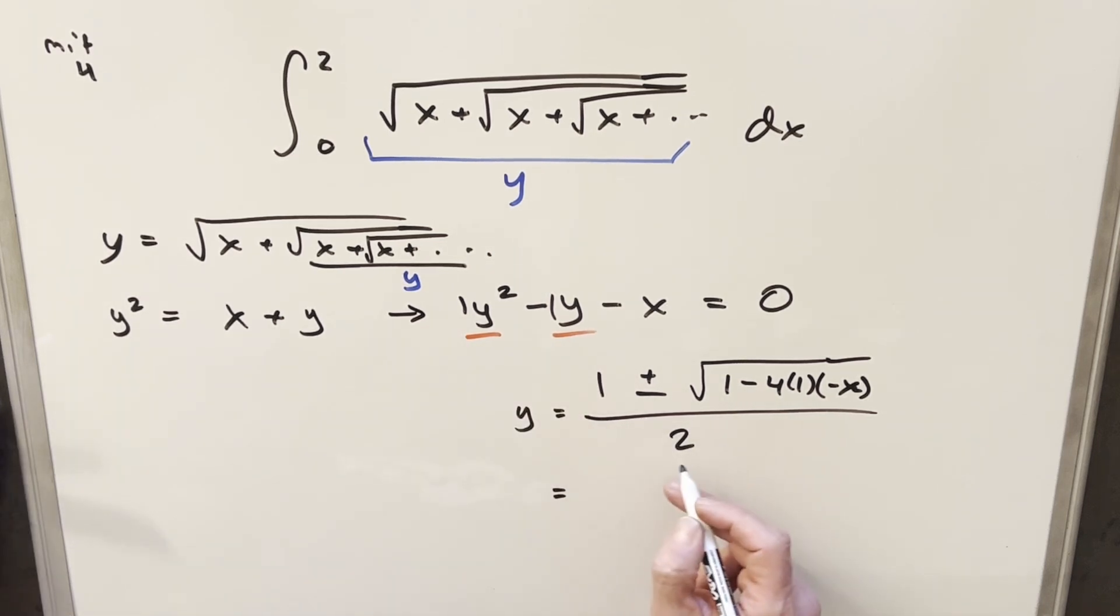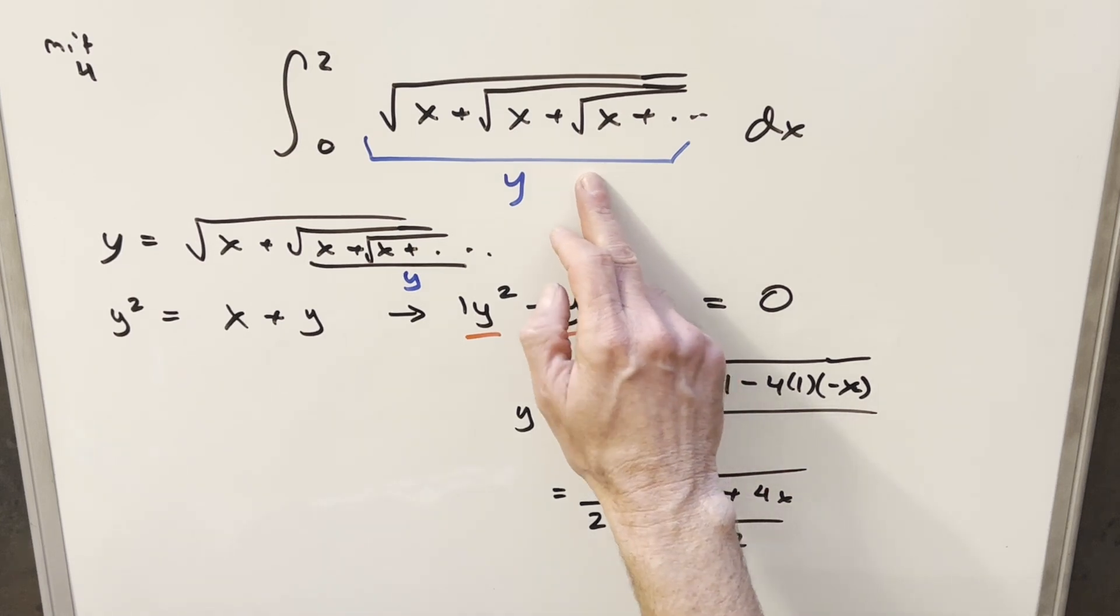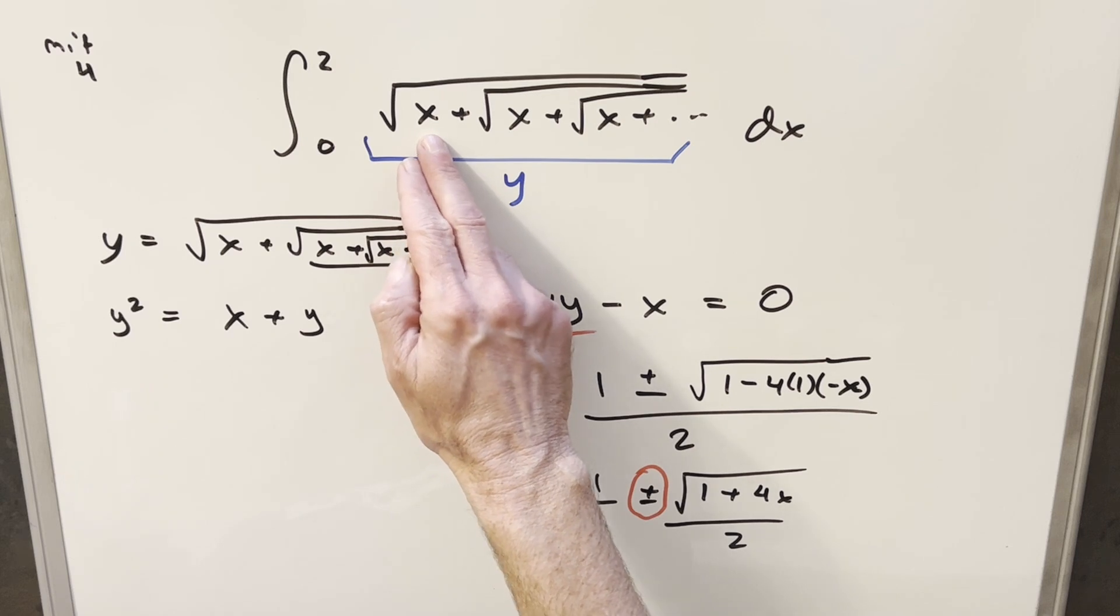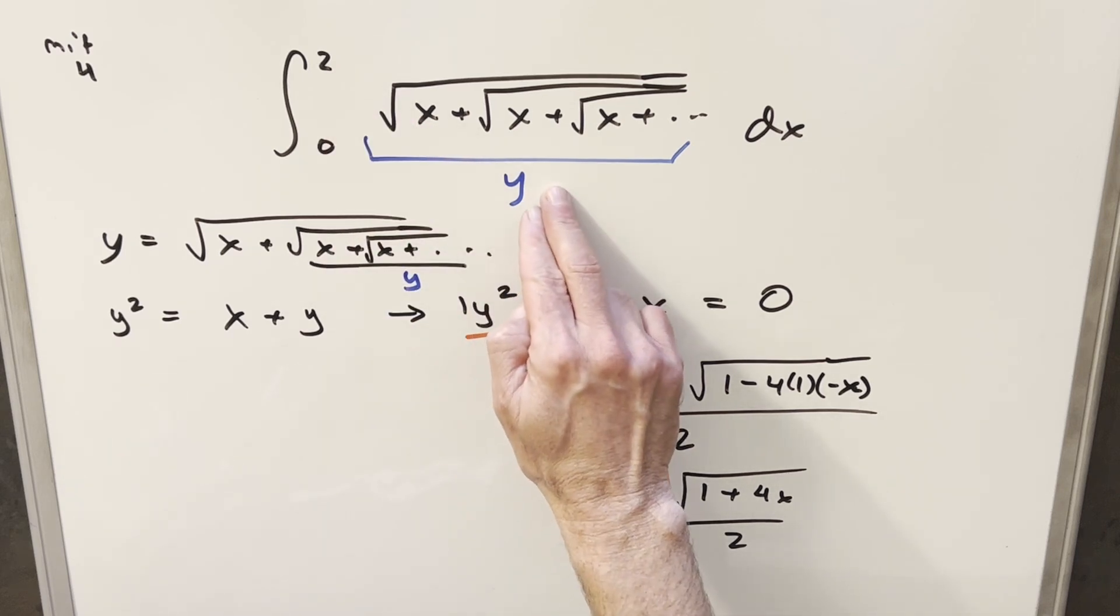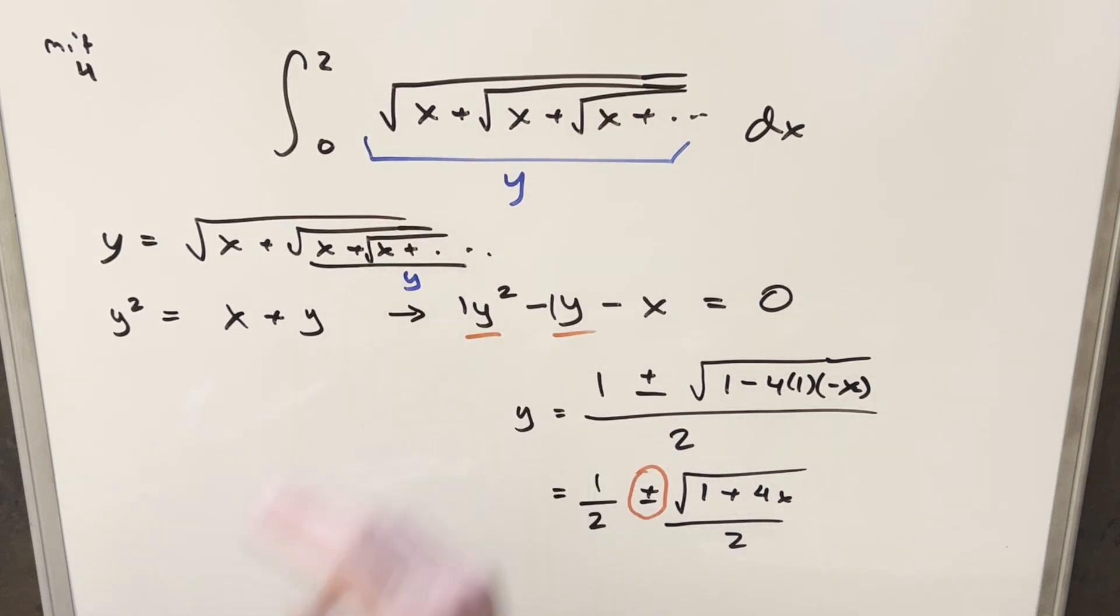Simplifying this, I'll divide the 2 into both parts. We have 1 half plus or minus—this whole thing reduces to 1 plus 4x over 2. Now I need to deal with this plus or minus.